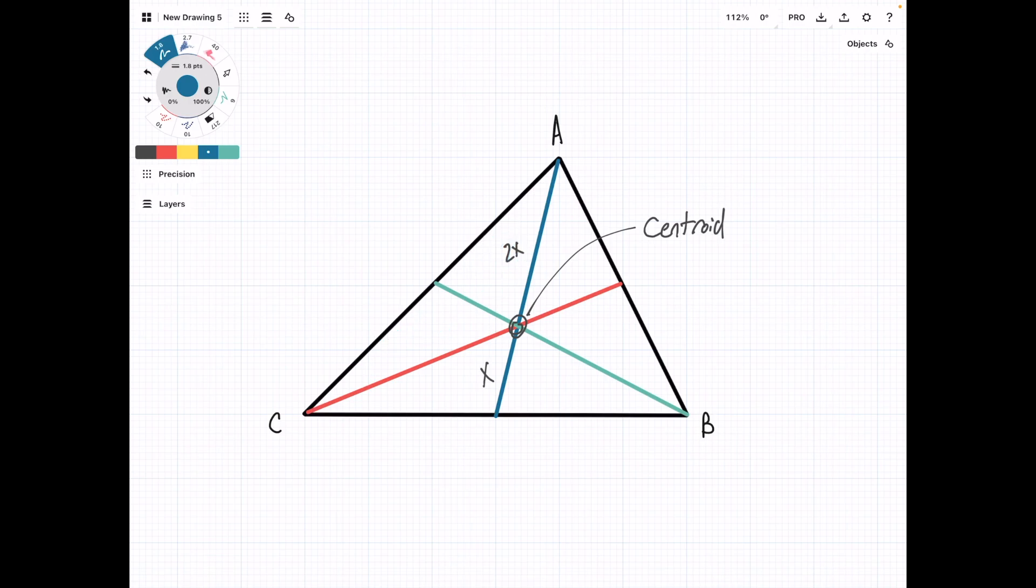The last thing to know about the medians and the centroid is that the centroid is located at a point that is the average of all of the other vertices. So in this case, we have vertices A, B, and C.